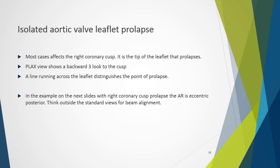In the parasternal short axis view, careful panning through the valve will identify a line running across the leaflet, distinguishing the point of prolapse. In right coronary cusp prolapse, the aortic regurgitation will be eccentric and posteriorly directed. It is important for the sonographer not to fall into the trap of a fixed mindset — to assess the aortic regurgitation by continuous wave Doppler, the best alignment might actually be achieved from the parasternal long axis view and not from the apical window.